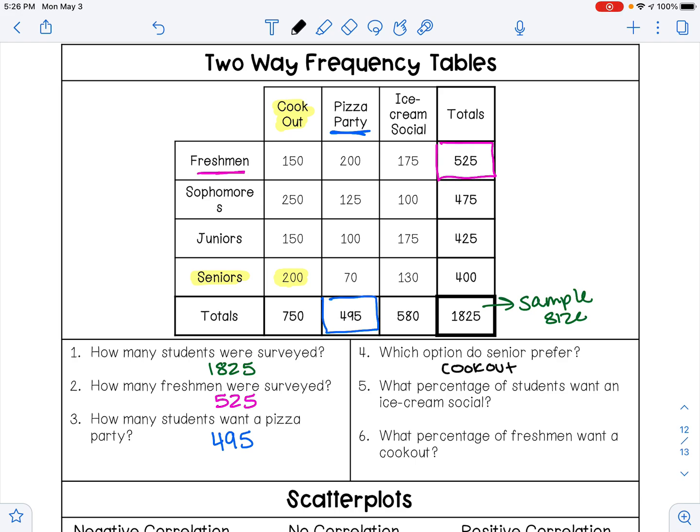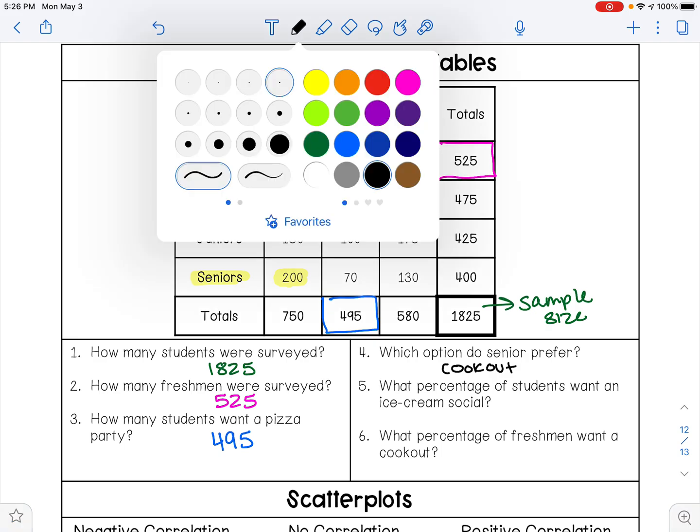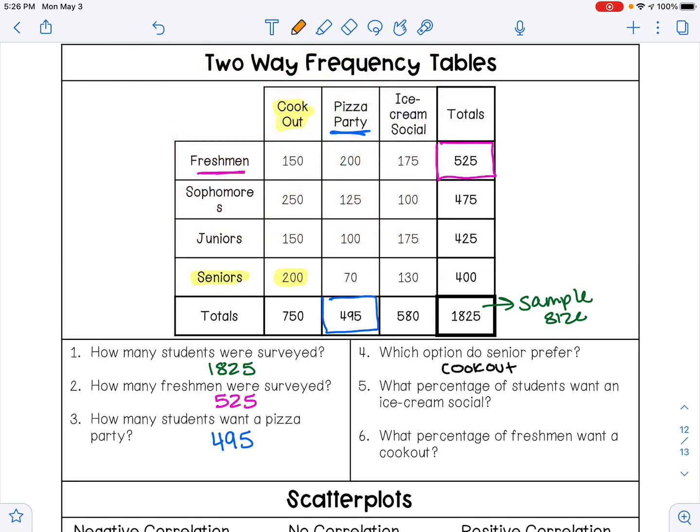What percentage of students want an ice cream social? So I'm going to go to ice cream social, that total is 580, and I'm going to divide that by the total number of students that took the survey. So 580 divided by 1,825, when you multiply by 100 you get 31.78 percent.